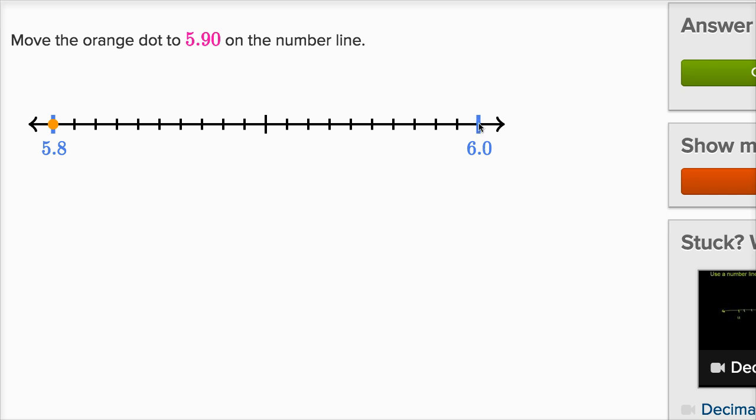One way to think about it is 5.9 is exactly halfway between 5.8 and 6.0. And it's written as 5.90, but we could view this as 5.9. So this is going to be exactly halfway.